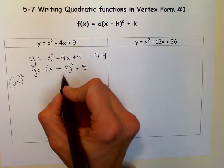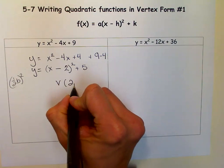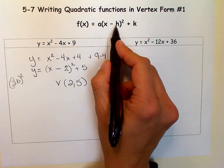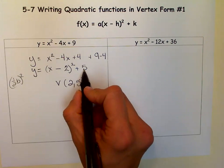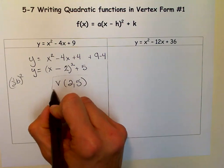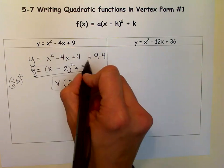This is the vertex form, so if you needed to find the vertex, you would know it was 2, 5, because it's always the opposite of what you see there, because it's minus h, so h is 2, and 5. So this is our vertex, and this is our vertex form.